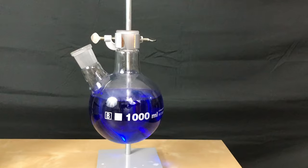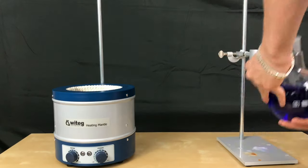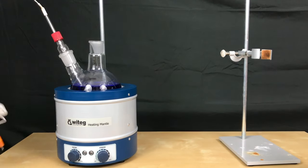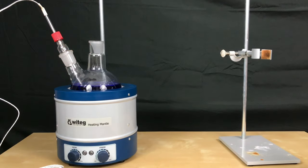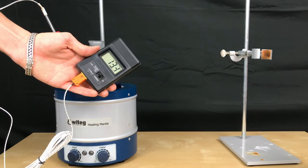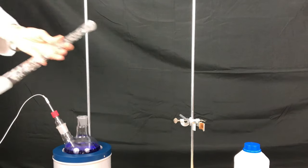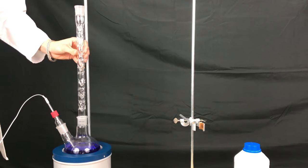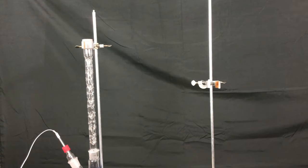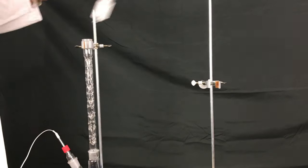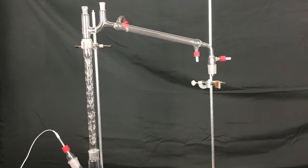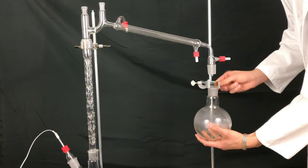We throw in a stir bar to ensure even boiling. With the apparatus fixed we add our distillation bridge and also our receiving flask.